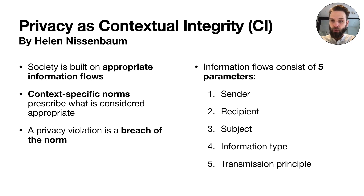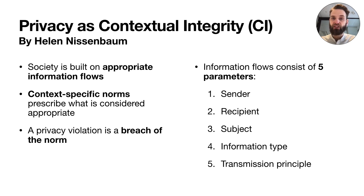But how do you know that? Well, each information flow consists of five separate parameters which, taken together, describe such an information flow: a sender who transmits the message, a recipient who receives the message, a subject whom the message is about, an information type — what kind of information is being transmitted — and a transmission principle, the conditions under which the transmission took place. Contextual Integrity therefore provides us with an excellent framework to make the specifics of online proctoring explicit: what data is being shared with whom and under which conditions?